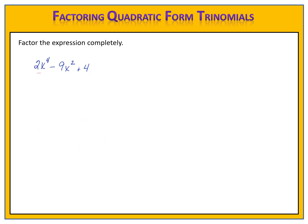Let's look at another exercise: 2x to the 4th minus 9x squared plus 4. This one is for you to try. Can you factor the expression completely? Please pause the video, give it a try, and come back when you're ready. First, we look at the trinomial to see if there's a greatest common factor — there is none. Can I use the grid? I look at the exponents: 2x to the 4th minus 9x squared plus 4. Yes, I can use the grid. I begin by filling it out with 2x to the 4th in the upper left-hand box and plus 4 in the bottom right-hand box.